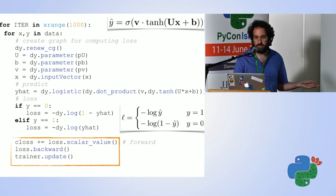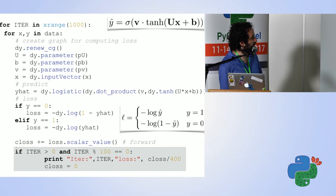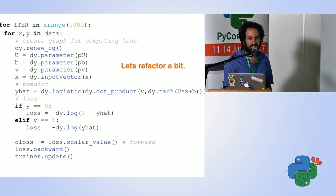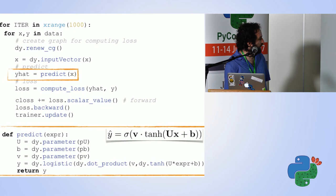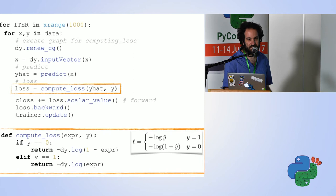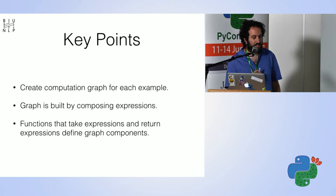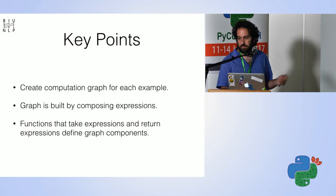Now let's do some refactoring because we are programmers and want nice code. We'll restructure into: input vector, predict, compute loss, and work with that. The predict function contains what we had before, just with a name. The compute_loss function is similarly just what we had before in a function. It's very easy to mix and match these things and write simple and elegant code. The key point is you create a new graph for each example, build it by composing expressions, and functions take expressions and return expressions as graph components.